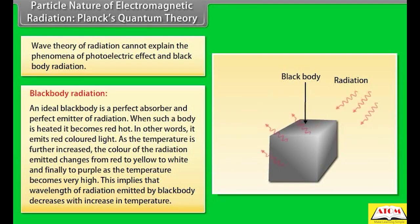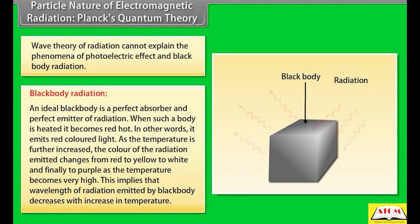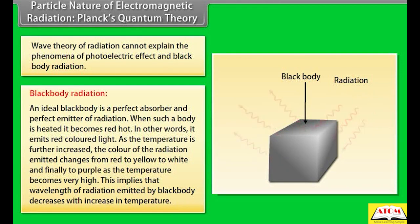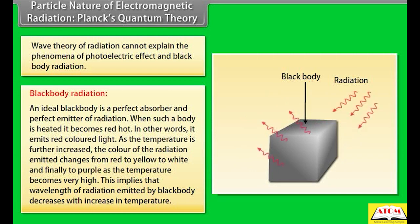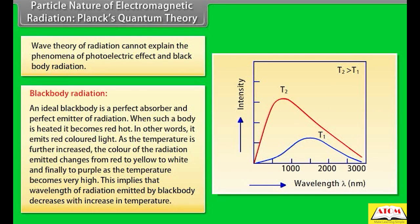When such a body is heated, it becomes red hot — it emits red colored light. As the temperature is further increased, the color of the radiation emitted changes from red to yellow, to white, and finally to purple as the temperature becomes very high. This implies that the wavelength of radiation emitted by a black body decreases with increase in temperature.